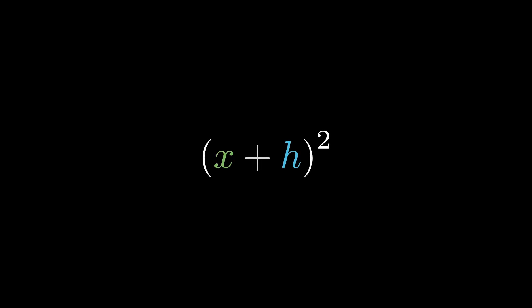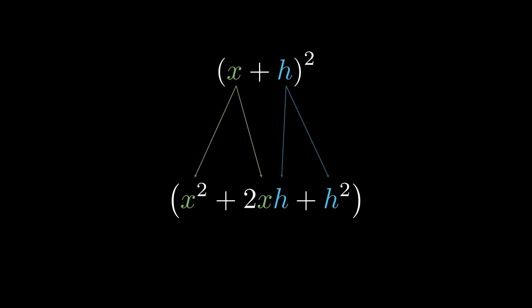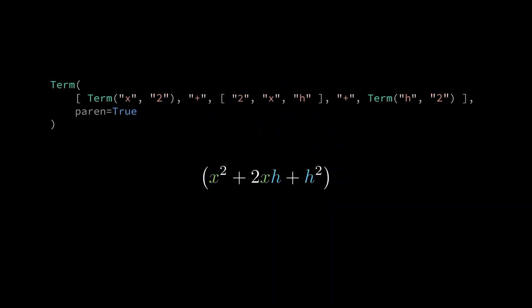Let's now animate the binomial expansion for x plus h squared. Notice how the x, h and exponent variables are broadcast to multiple locations in the target state. This will be our construction for the binomial expansion. Take a moment to observe where the sites are for x squared, 2xh and h squared respectively.